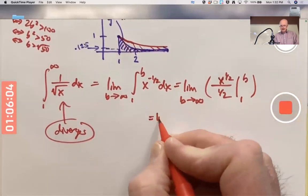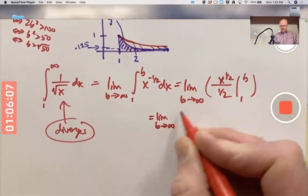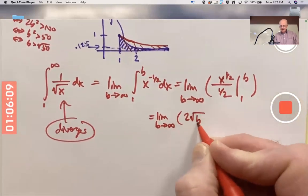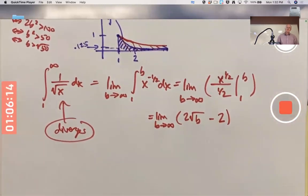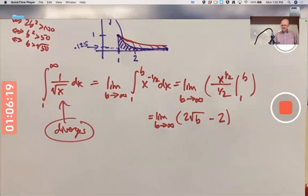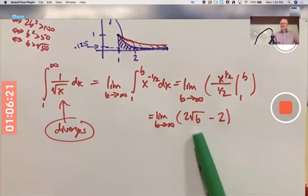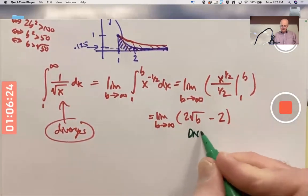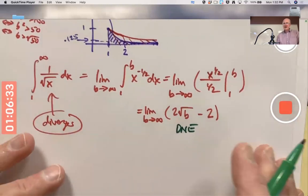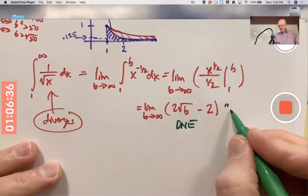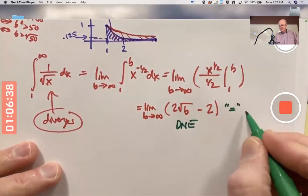So you're going to get the limit as b goes to infinity of 2 times the square root of b minus 2 times the square root of 1, which is 2. That limit does not exist. D-N-E. Why? Because it doesn't equal a number. Some people go ahead and write equals, and I'm going to go ahead and do that with quotes around equals, equals infinity.